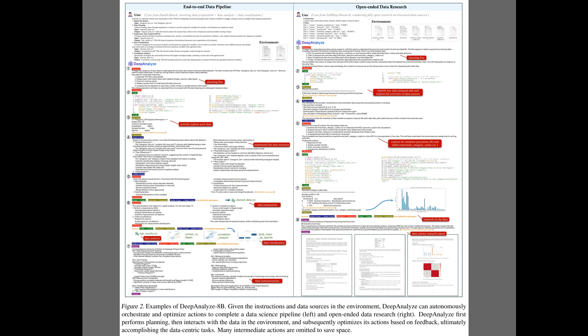Figure 2 shows concrete examples of the agent running both an end-to-end data pipeline and an open-ended research task. The figure illustrates stepwise planning, code generation, execution with feedback, and iterative refinement, which together form an autonomous loop. The left panel walks from data preparation to analysis, modeling, visualization, and a final report. The right panel highlights exploratory research that inspects databases, charts results, and compiles a narrative report.